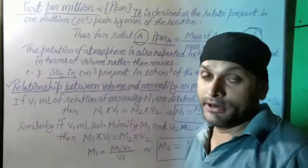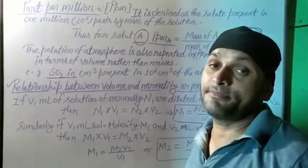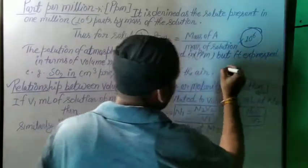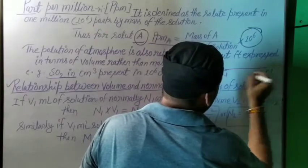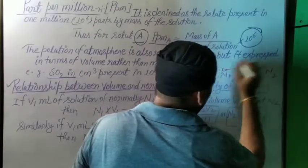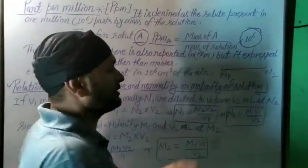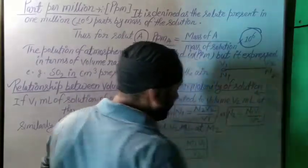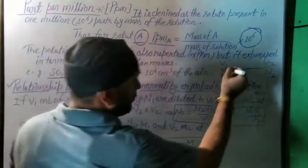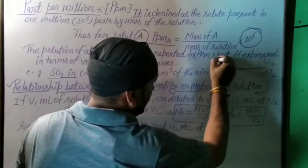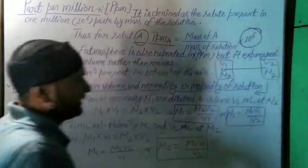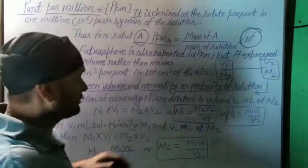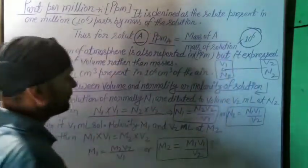If we consider normality as N1, and assume two phases — normality has two phases, one N1 phase and one N2 phase — then in the N1 phase the volume will be V1, and in the N2 phase the volume will be V2. So the product of these two will be equal to the product of the other two. That means N1 multiplied by V1 is equal to N2 multiplied by V2.